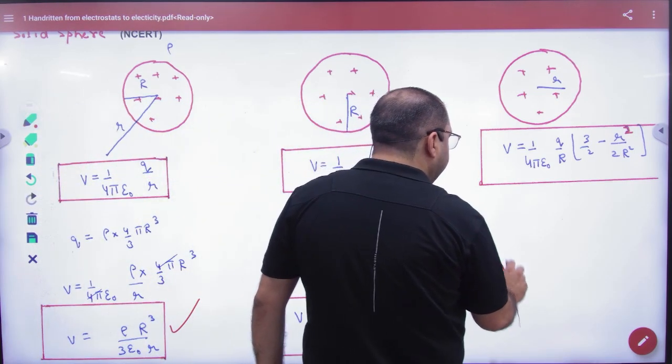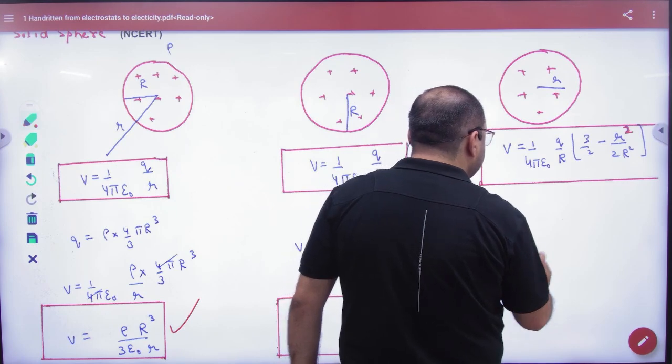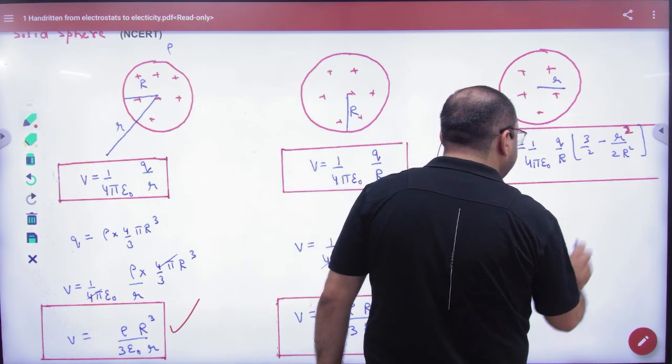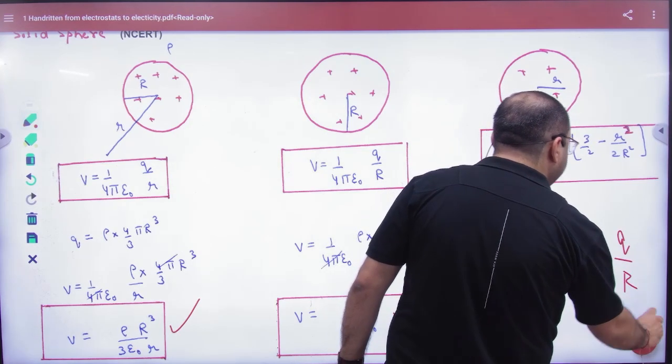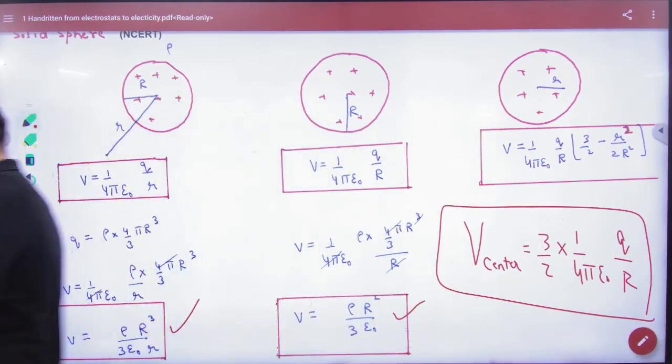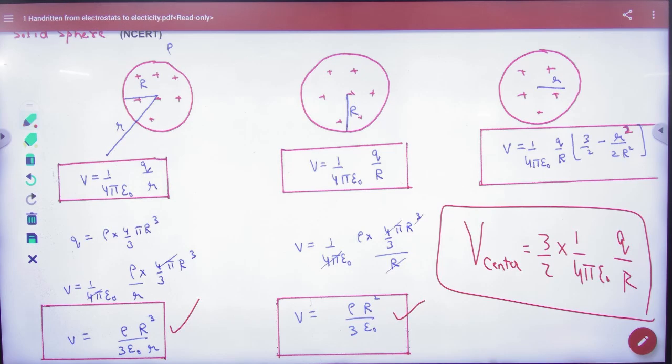Formula also note. Potential center - what will keep center? 3 by 2 times the surface. On surface, surface on. Surface the 1, 2, 3, 1, 3, 3.